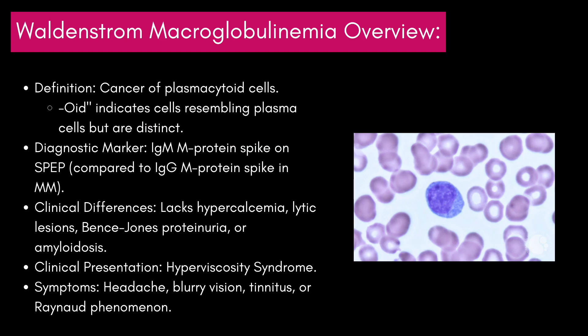Let's open today with an overview of Waldenstrom macroglobulinemia. Definition: cancer of plasmacytoid cells. The ending '-oid' indicates cells resembling plasma cells but are distinct, so be sure to keep that in mind when thinking of plasmacytoid cells versus plasma cells.